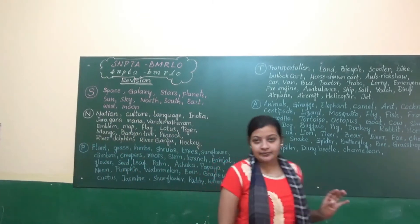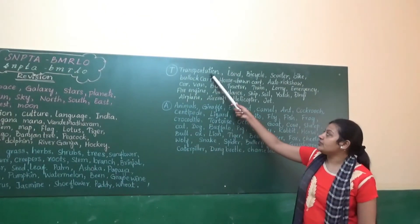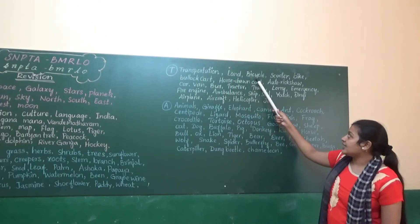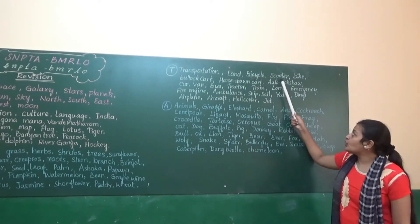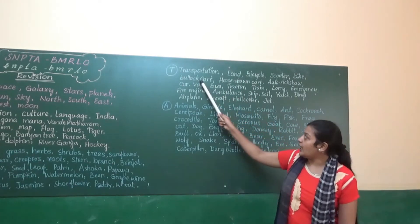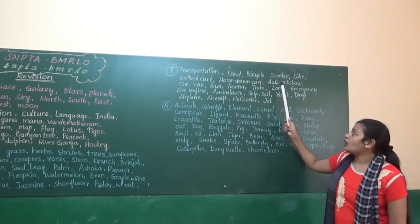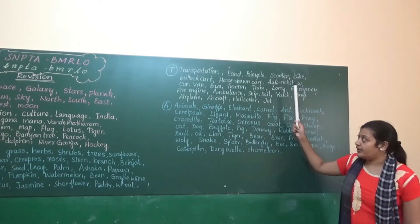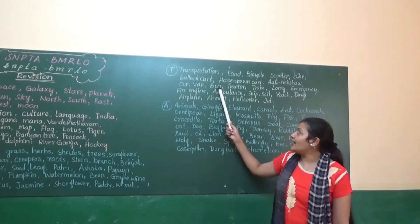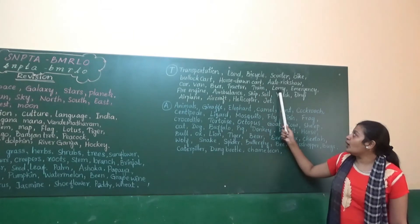Same way, we will go with T — Transportation. Land: bicycle, scooter, bike, bullock cart, horse, drone, cart, auto, rickshaw, car, van, bus, tractor, train, lorry.